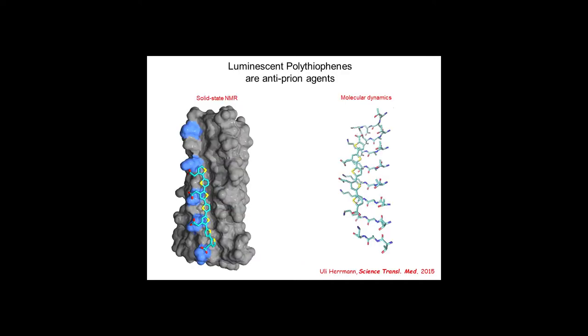And then, of course, this is indirect evidence, but then I was really interested in finding out the real structure. And then we got together with Beat Meier, who is a solid-state NMR specialist at ETH, and Willy Hermann was an MD-PhD student in my lab, and what they eventually did, and this was the work of Anne Schuetz in the lab of Beat Meier, to actually resolve the structure of a polythiophene complexed with a prion fibril.